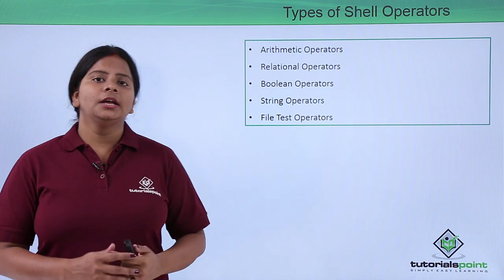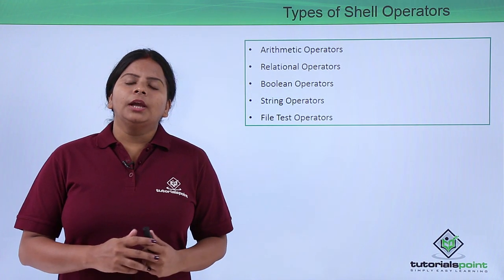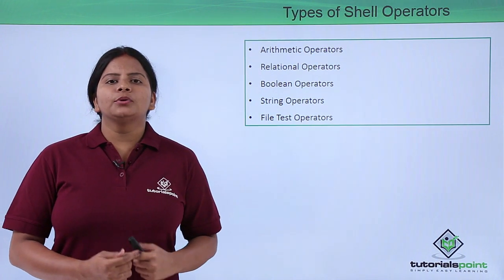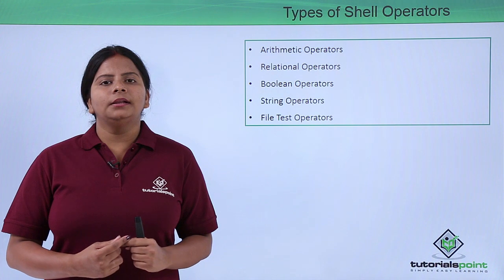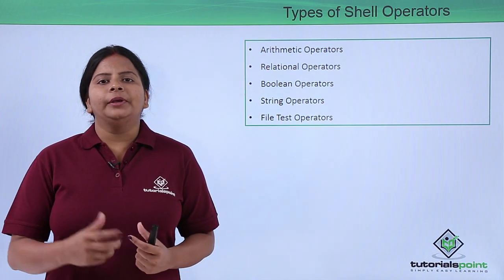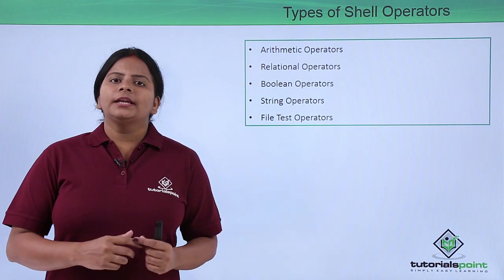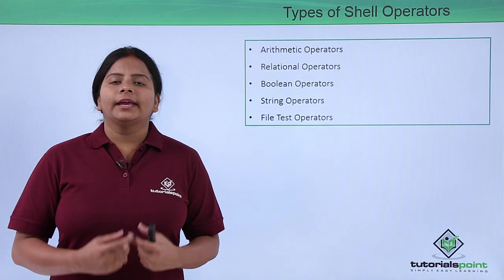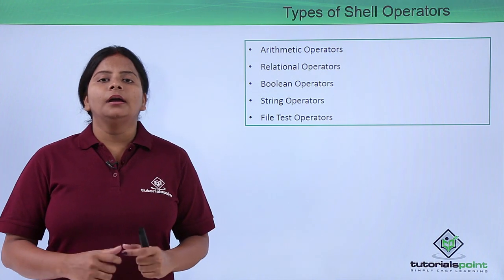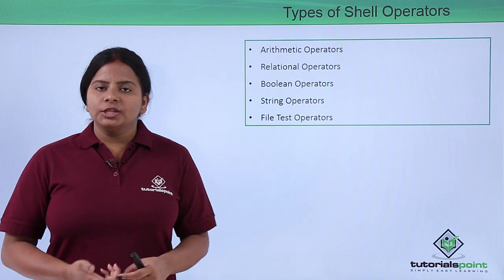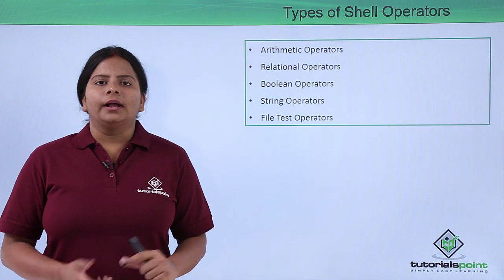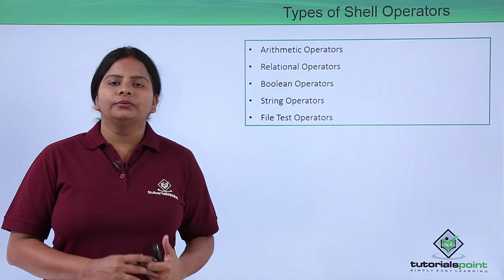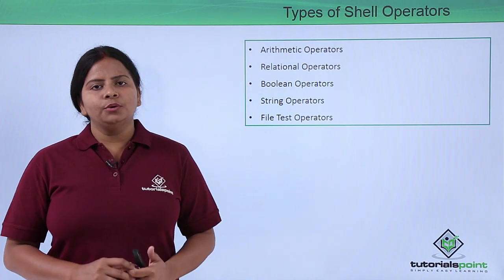The next operators we have are file test operators. These operators generally work to test for file content. If I want to check whether a file I have created is 100 MB or more, I can check using this particular operator. These operators always work on a file — I can check what the file contents are, what letters are written in the file, what the size of the file is, what the format of the file is. All the tests will be performed on a specific file, and we just need to define the file name we want to test.